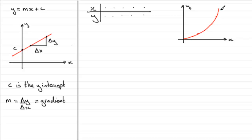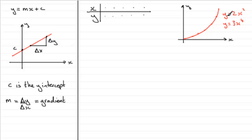The question is, what is the relationship between y and x? Is it something like y equals 2x squared, or y equals 3x to the power 4? Something like this most probably has the form y equals a constant a, times x to another constant power — y equals a times x to the power k. We want to work out what the values a and k are.